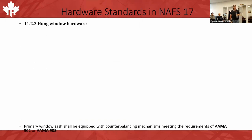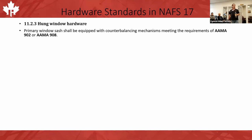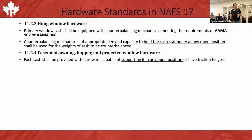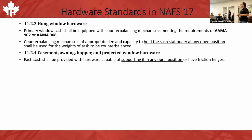Section 11.2.3 of NAFS covers hung window hardware: primary window sashes should be equipped with counterbalancing mechanisms meeting AMA 902 or 908, of appropriate size and capacity to hold the sash stationary in any position. We've all come across situations where somebody put the wrong balances in and it falls down or won't stay in a certain spot. For casement, awning, hopper, and projected windows, each sash should be provided with hardware capable of supporting it in any open position, or have friction hinges. You can't just use a regular hinge without a friction hinge — the sash will swing like a flag in the wind.